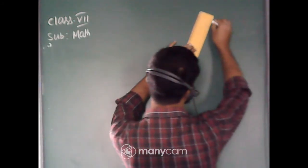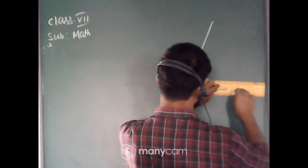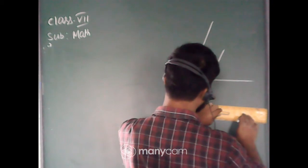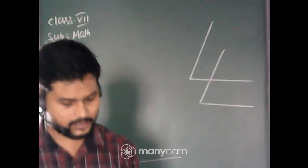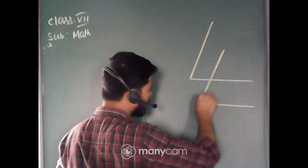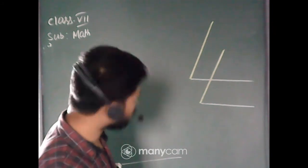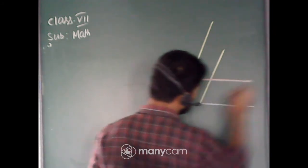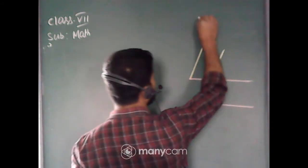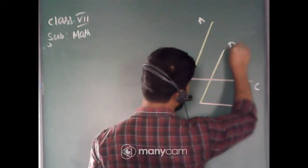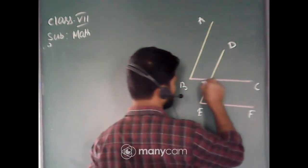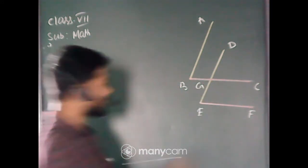First, draw two angles — one is this angle, and one is this angle. The arms of the angles are parallel to each other. The name of the angles are ABC and DEF. This is our ABC angle and this is our DEF angle. This point is Z, this point is G, and one angle is given — this angle is 70 degrees.